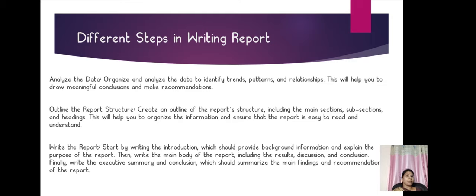Step 5 — write the report. Start with the introduction and provide the background information and the purpose of writing the report. The main body of the report should include results, discussions, and conclusions. Finally, give the executive summary and conclusion, which should summarize the main findings and recommendations of your research report.